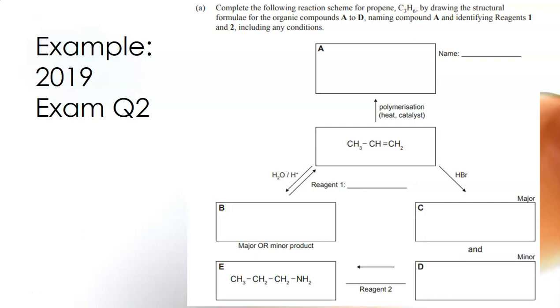If you weren't sure you can look, compound D which is the minor product is making compound E which is an amine and you'll notice where the amine is positioned on that molecule is at the end of the chain so therefore the halogen and compound D must also be on the end of the chain which makes it again 1-bromopropane.